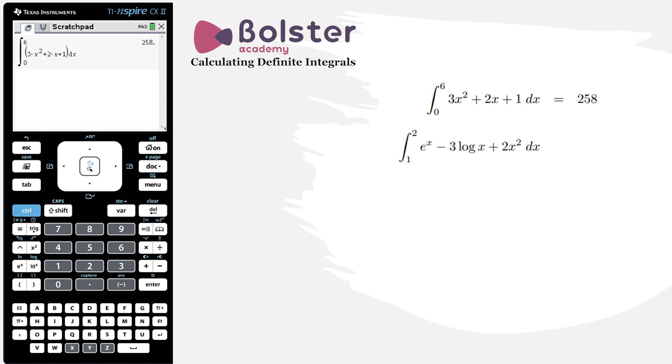Let's look at another problem. Here we've got the integral from 1 to 2 of e to the x minus 3 log x plus 2x squared dx. So the exact same process again.